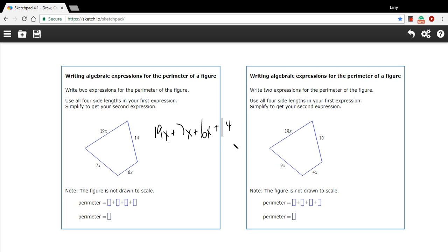So that's one expression for the perimeter. We can simplify this by combining the like terms. All of these are x terms, so 19x plus 7x would be 26x plus 6x would be 32x. Then we just have our plus 14 left over. So that would be the simpler way to write this algebraic expression, and that would be our answer for the perimeter.